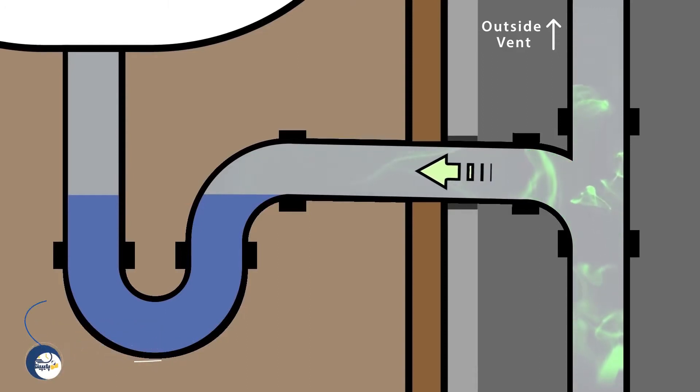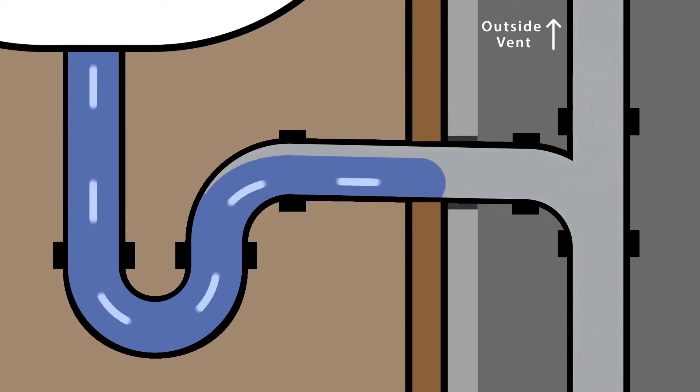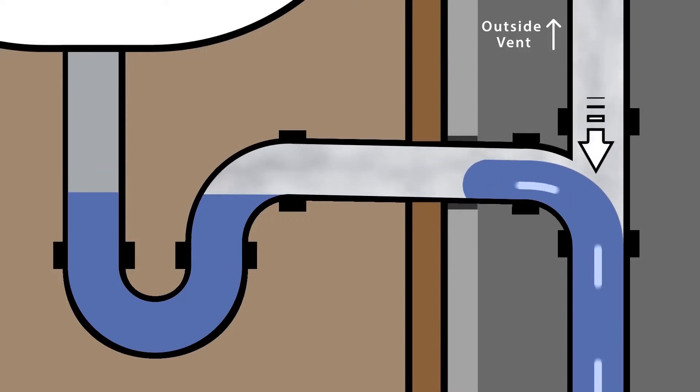This trap seal prevents sewer gases and odors from leaking into your home. As water drains through the P-trap, air is pulled from an outside vent to equalize the pressure.